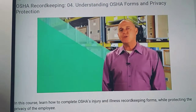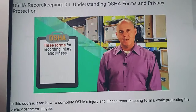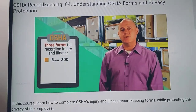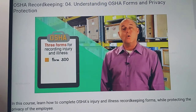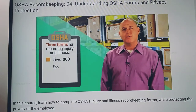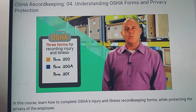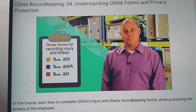To begin with, OSHA has three forms for recording injury and illness. The OSHA Form 300, which is the log of work-related injuries and illnesses, also called the OSHA 300 log or OSHA log. The OSHA Form 300A, which is a summary of work-related injuries and illnesses, and the OSHA Form 301, the injury and illness incident report.